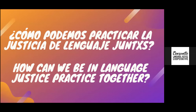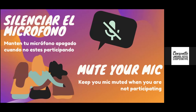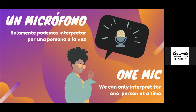How can we be in language justice practice together? We ask you to mute your phone if you're not speaking — that will help us have a clear sound as we interpret. We only have one mic to interpret, so we ask you to speak one at a time. We don't want to choose who to interpret for. Just a reminder not to talk over each other.